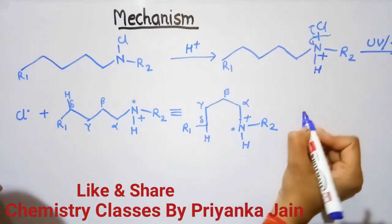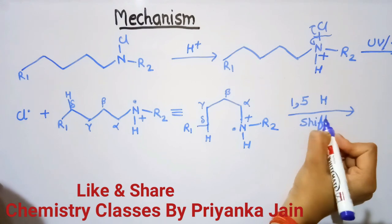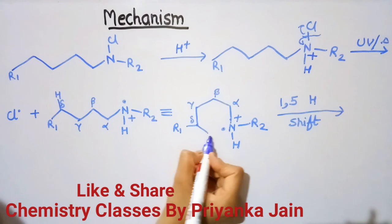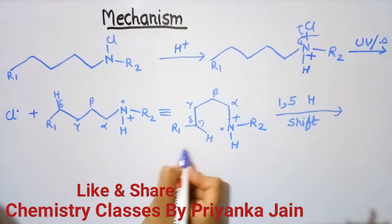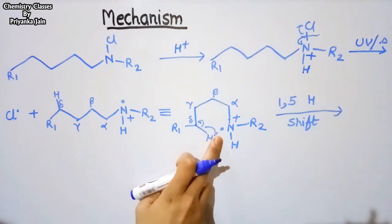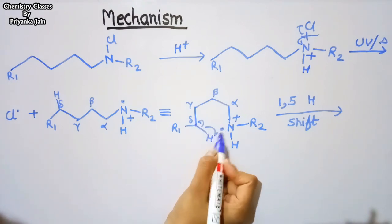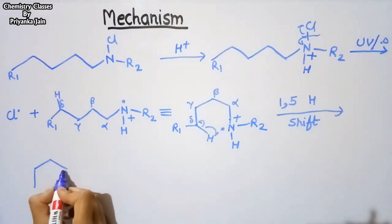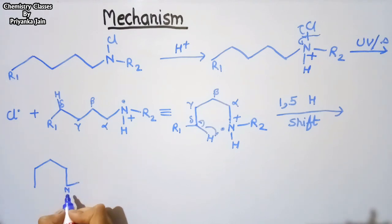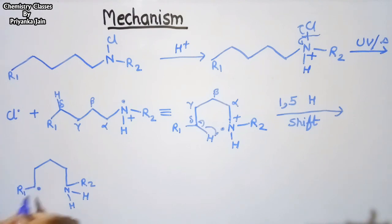There will be a 1,5-hydrogen shift. One electron goes to nitrogen and one electron shifts from the C–H bond, shown by a fishhook arrow. A new bond is formed: one hydrogen joins the nitrogen (now bearing two hydrogens), R1 remains, and a new carbon radical is formed at the delta position, with a positive charge on nitrogen.